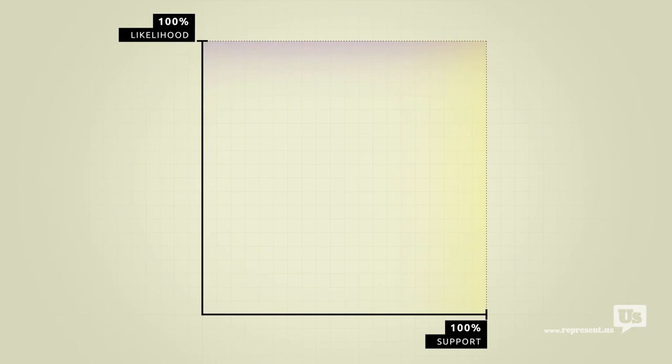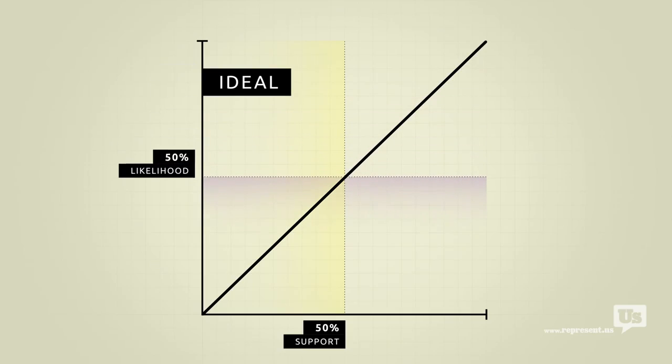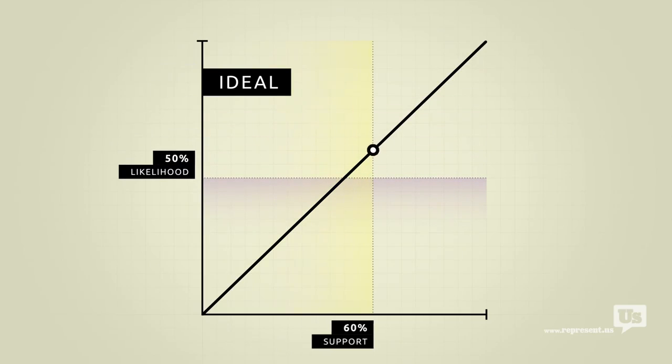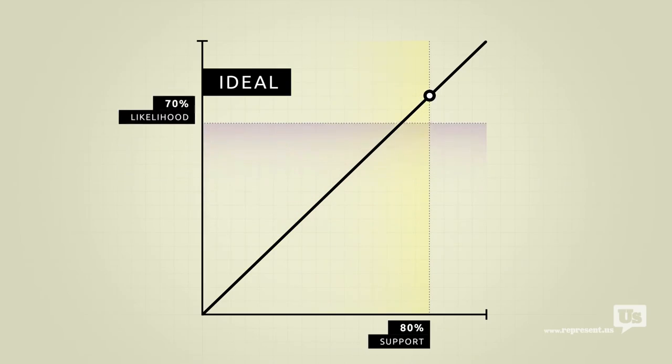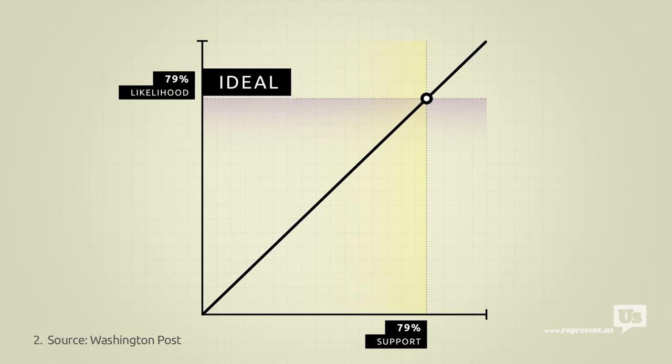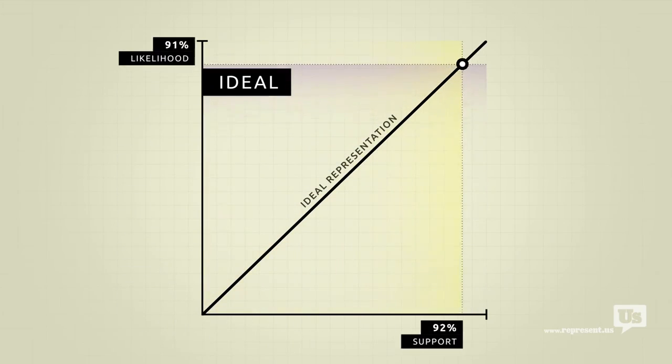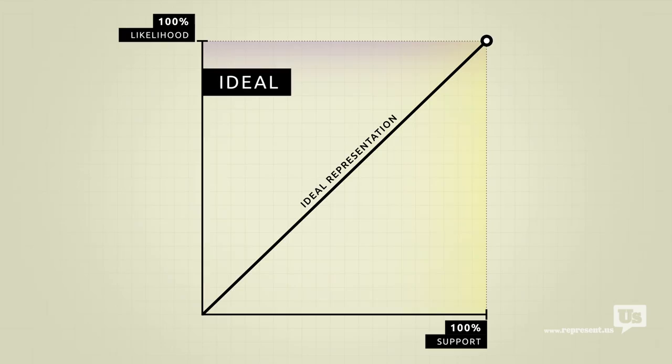On this graph an ideal republic would look like this. If 50% of the public supports an idea there's a 50% chance of it becoming law. If 80% of us support something there's an 80% chance. You get the idea. Now most Americans would probably agree that with a few exceptions we should be as close to this ideal as possible. Unfortunately the way America actually works doesn't even come close.